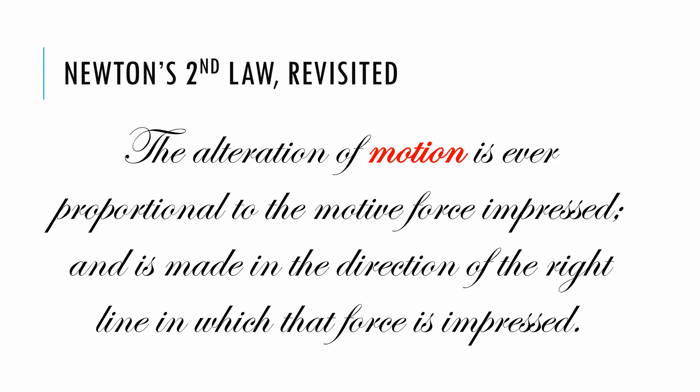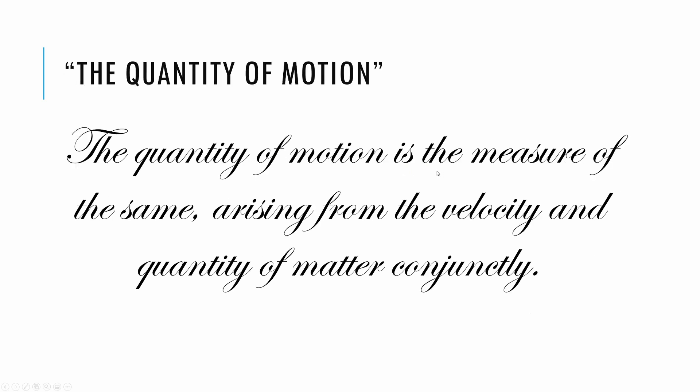So let's go back to Newton's second law where he talked about the alteration of motion. Motion was further defined: the quantity of motion is the measure of the same arising from the velocity and quantity of matter conjunctly. This is a little old timey, but we can break down what it means. Velocity is easy enough, and quantity of matter probably means mass. So motion, this quantity of motion, which we're going to call momentum, comes from velocity and mass conjunctly, which is a fancy way of saying multiplied together.